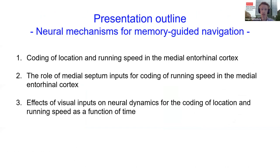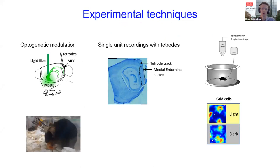In the following 10 minutes, I will first present data on the coding of location and running speed in the medial entorhinal cortex. In the second part, I will examine the role of medial septum inputs for the coding of running speed. In the last part, I will present data on the effects of visual cues on neural dynamics for the coding of location and running speed as a function of time.